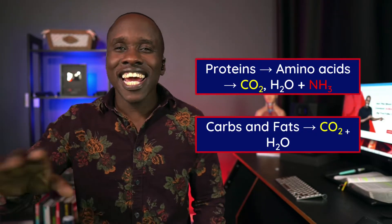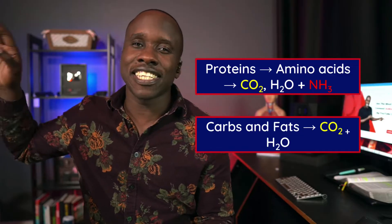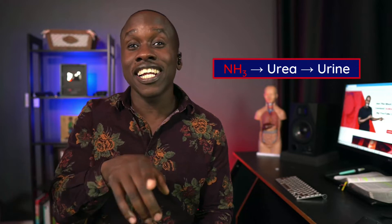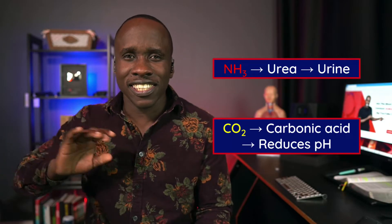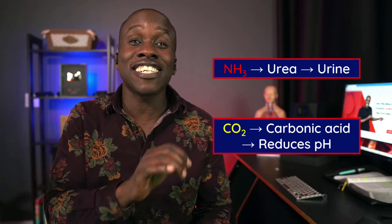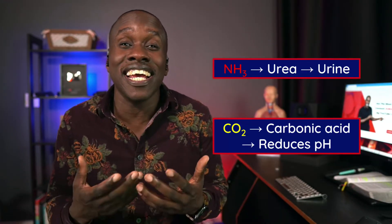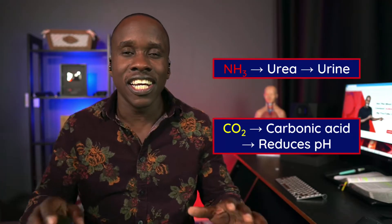The bulk of the carbon dioxide gets taken care of by the respiratory system — you breathe out carbon dioxide. But there's some other stuff that happens. The NH3, the ammonia, gets converted into urea, and the urea leaves via the urine. That's good, because we don't want a ton of ammonia in our body. Some of the carbon dioxide that doesn't go out via your respiratory system gets converted into carbonic acid. If you have a lot of acid in your body, that reduces the pH, making it more acidic. We don't want that — we want to get rid of this excess waste, and that's where the urinary system comes in.